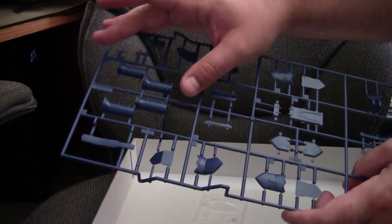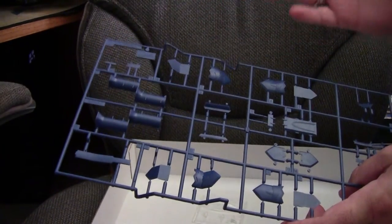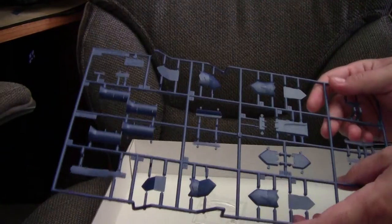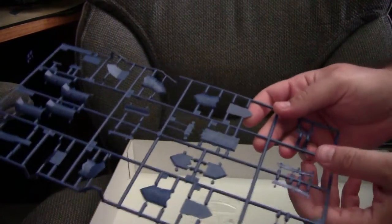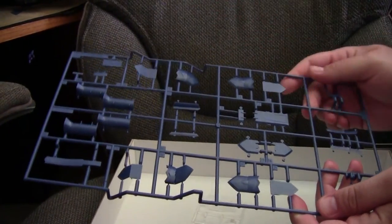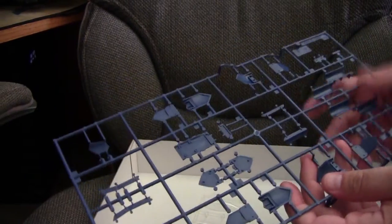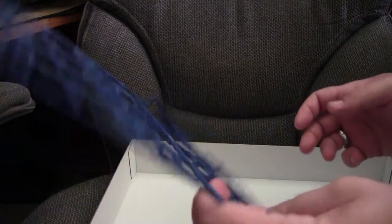On this sprue, we get the engines, which is a twin-engine configuration in a vertical stack, which is different, as well as the gear doors and vector fins for the exhaust. Again, typical Hasegawa quality, not much to say about these parts.